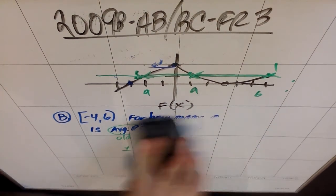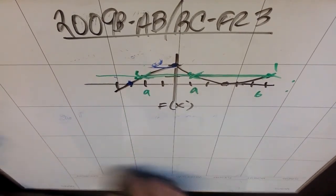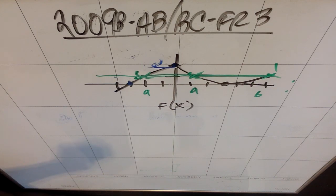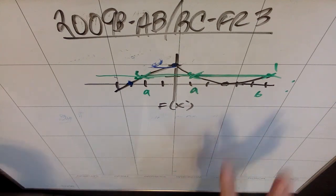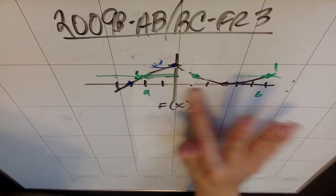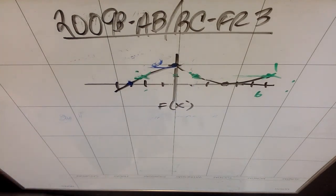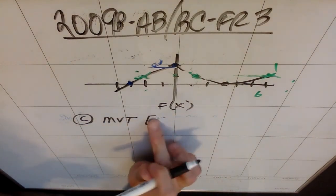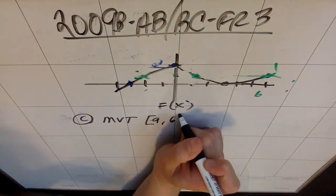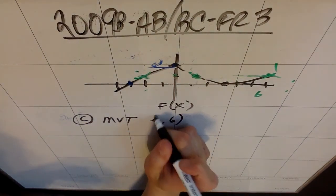Part C: Is there a value A from negative 4 (included) to 6 (not included) for which the Mean Value Theorem applied to the interval from A to 6 guarantees a value C such that F prime of C equals one-third? Justify your answer. You have a fixed endpoint at x equals 6. If you wanted to make a line with slope one-third, you keep that endpoint fixed and ask whether there's a suitable A.